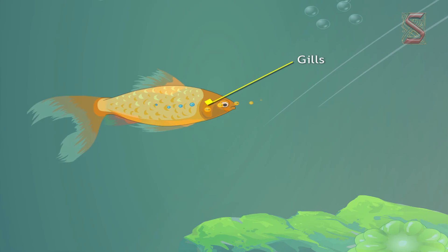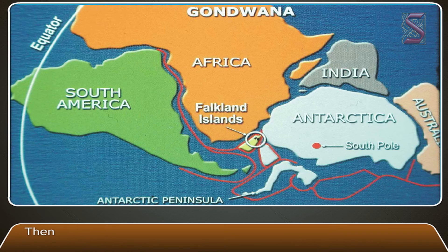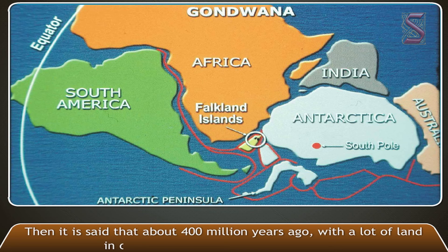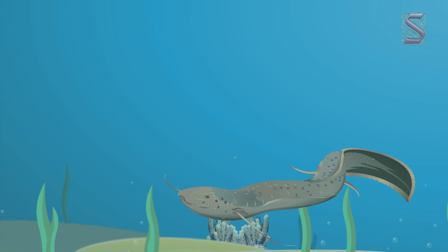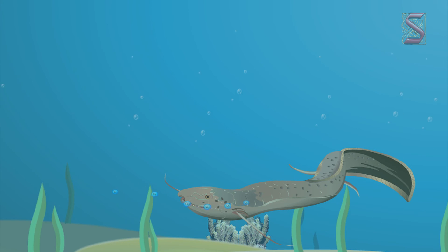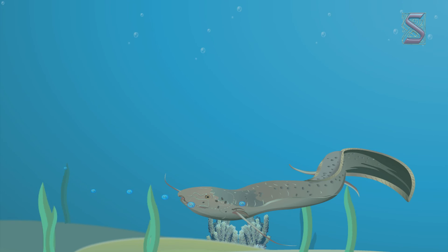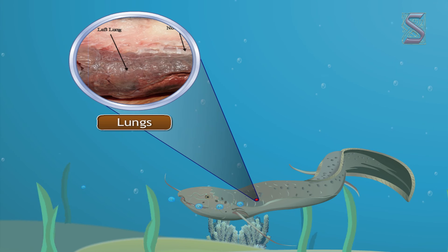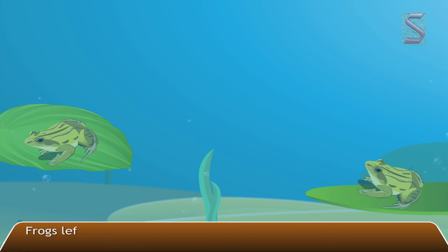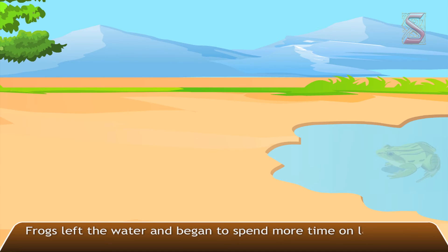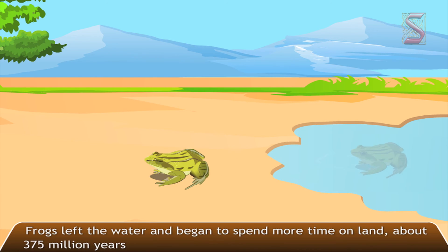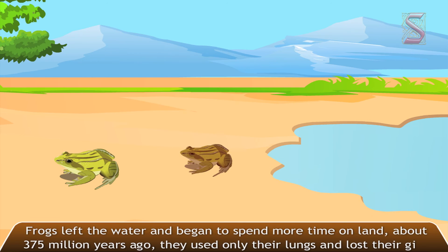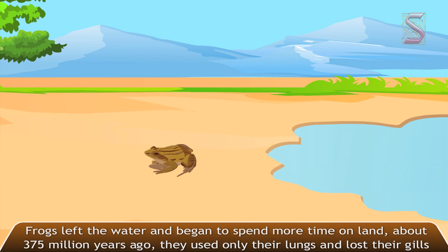It was during this time that fish developed gills that could take in more oxygen more efficiently, supporting cells not in direct contact with water. About 400 million years ago, with a lot of land in one supercontinent called Gondwana, some fish got stuck in smaller ponds and died out, but some evolved to use their lungs for breathing — these were known as lung fish. When frogs left the water and began to spend more time on land, about 375 million years ago, they used only their lungs and lost their gills.